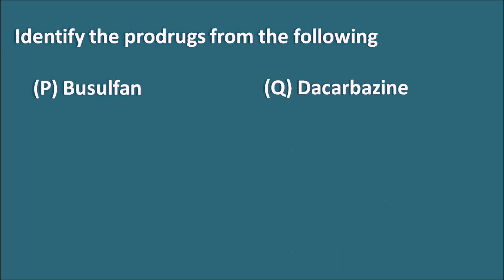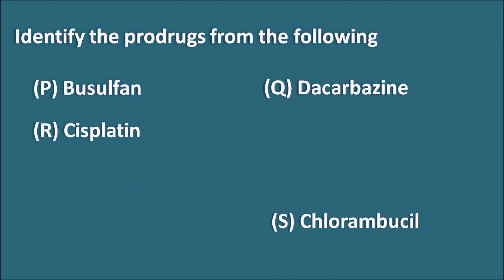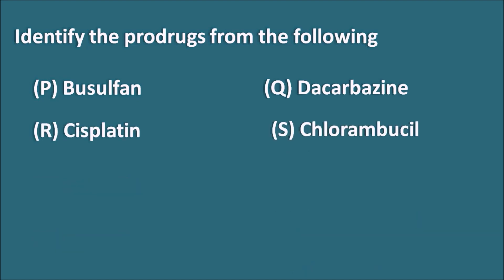Next question: identify the prodrug from the following — P: busulfan, Q: dacarbazine, R: cisplatin, and S: chlorambucil.